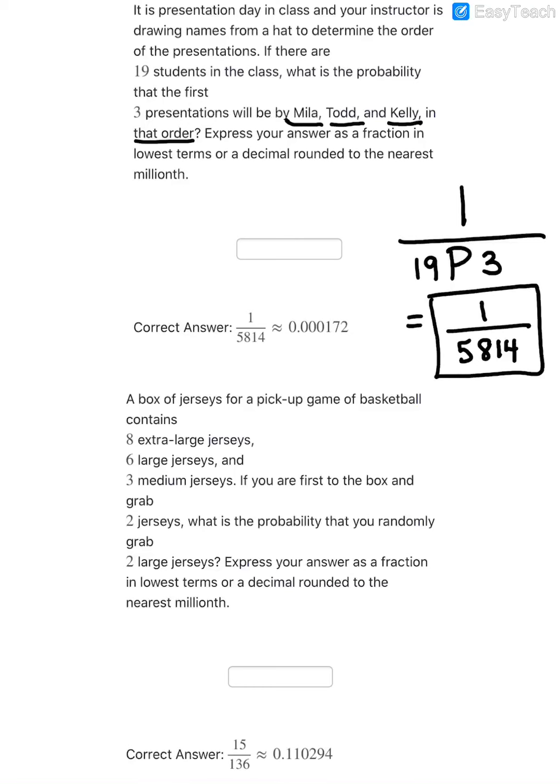And then finally, on the last question, we have a box of jerseys for a pickup game of basketball contain 8 extra large, 6 large, and 3 medium. So that is 17 jerseys altogether. And it says, if you are first to the box, and you grab 2 jerseys, what's the probability you randomly grab 2 large? Well, there are only 6 in the box, so on your first grab, you would have a 6 out of 17 chance of getting a large.